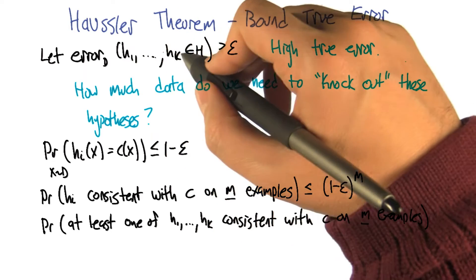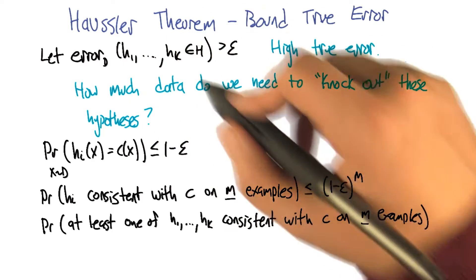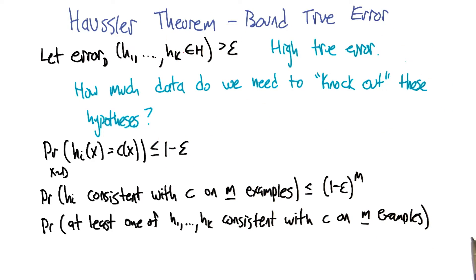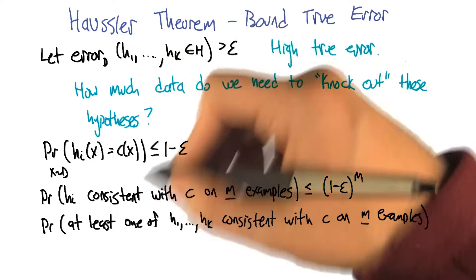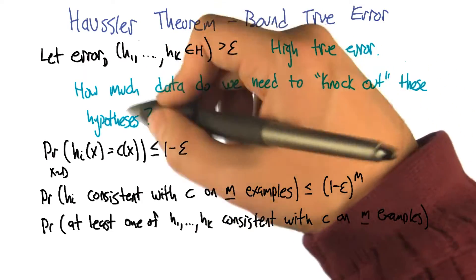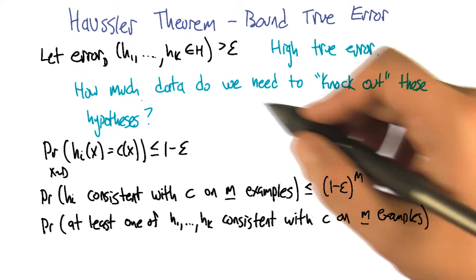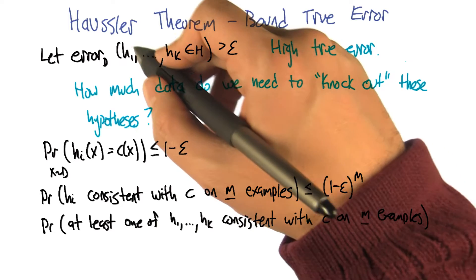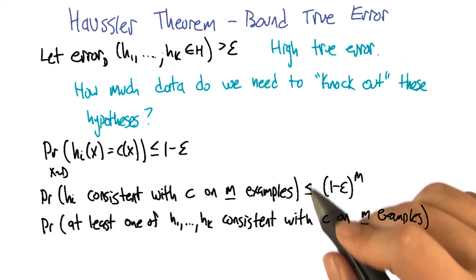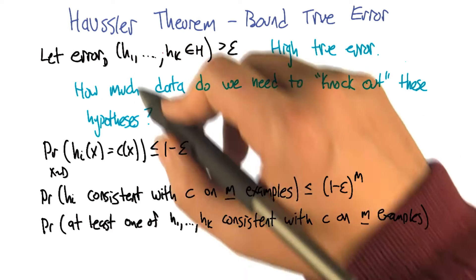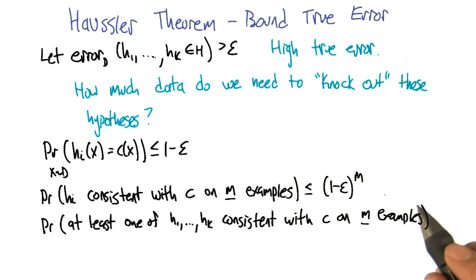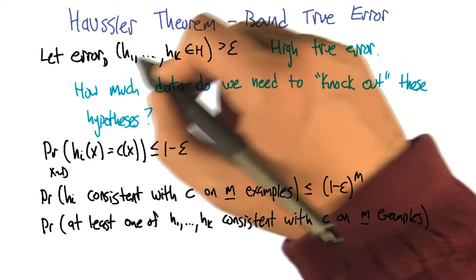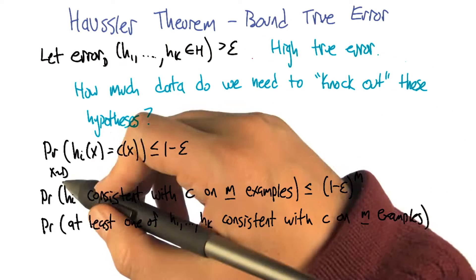All right, so let's let h1 through hk be the ones that have, a priori, high true error. What we'd like to do is make sure that as we're drawing data sets that we have knocked all these guys out. We've gotten enough examples that actually allow us to verify that they have high error on the training set. So how much data do we need to establish that these guys are actually bad?